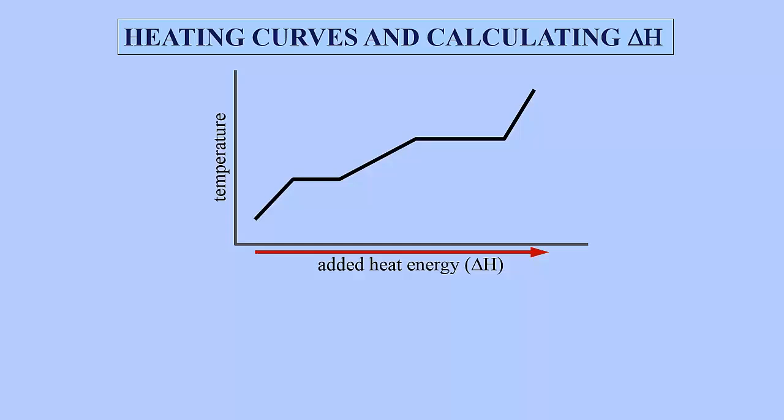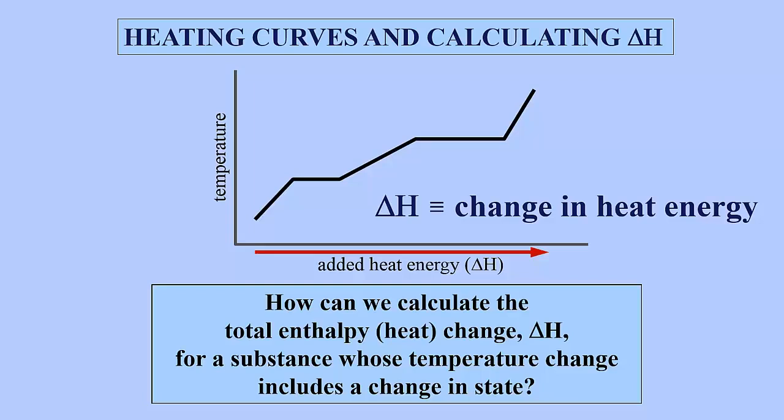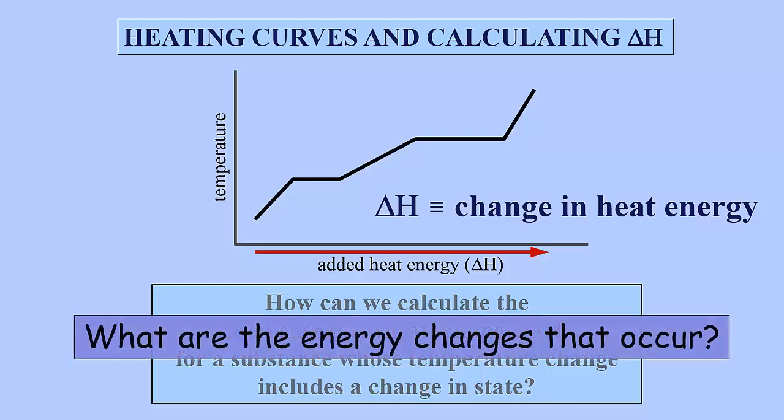The energy change is referred to as delta H, meaning enthalpy change. Enthalpy itself is not measurable, but the enthalpy change is measurable because it is equivalent to a change in heat energy when pressure is constant, and we can assume constant pressure under standard laboratory conditions. The question we will be addressing is: how can we calculate the total enthalpy change for a substance whose temperature change includes a change of state?